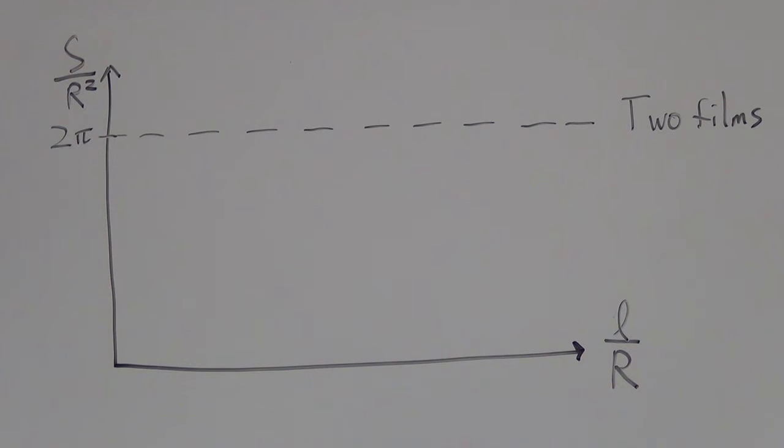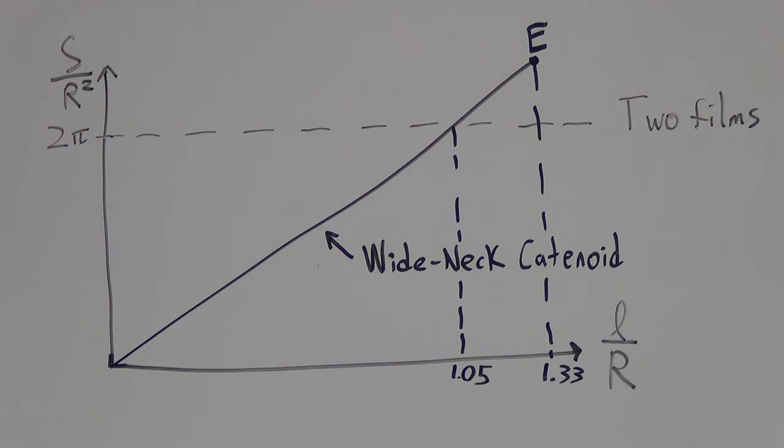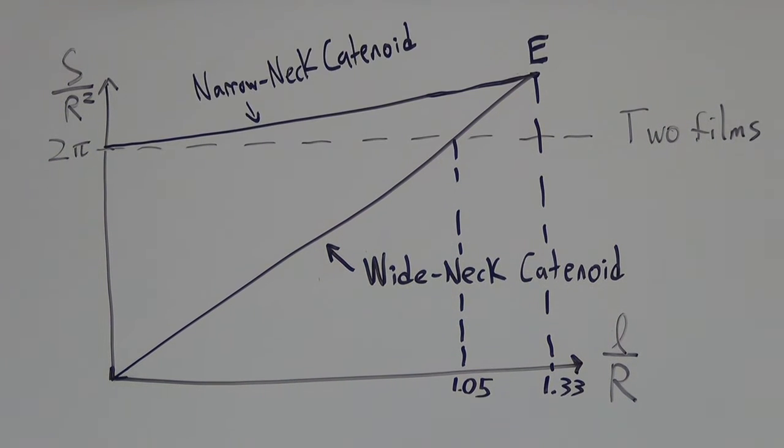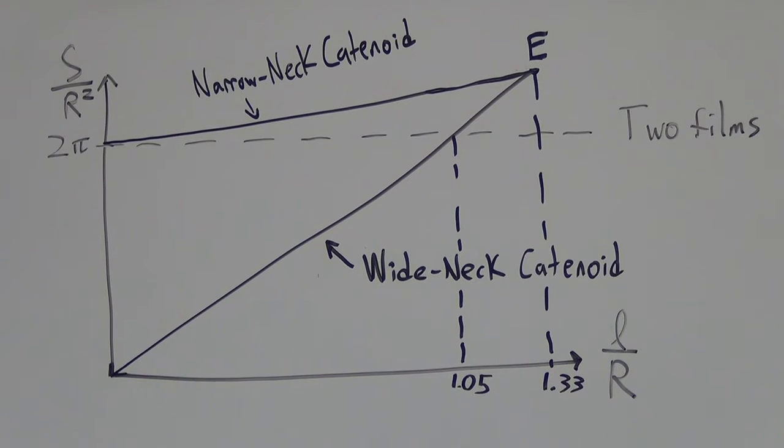For the two films, there is a constant surface area. The wide neck catenoid's surface area constantly increases until it gets to point E, which is the maximum separation. The narrow neck catenoid always has a surface area greater than the other two.